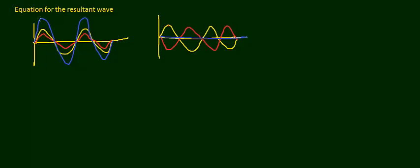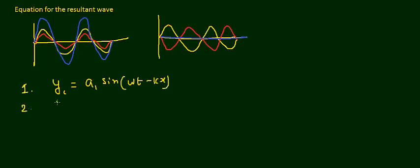I want to get an equation for the resultant wave — the blue wave. To do that, I'll first write the equation for wave 1 and wave 2. The yellow one is wave 1, the red or pink one is wave 2, and the blue is the resultant. For wave 1: y₁ = a₁ sin(ωt − kx). For wave 2: y₂ = a₂ sin(ωt − kx + φ).